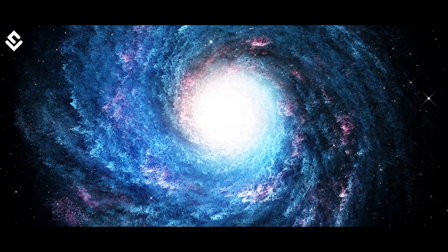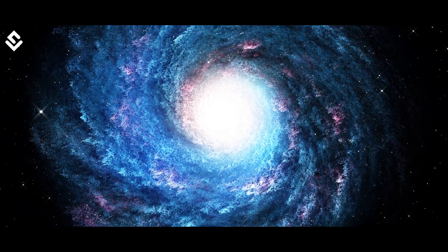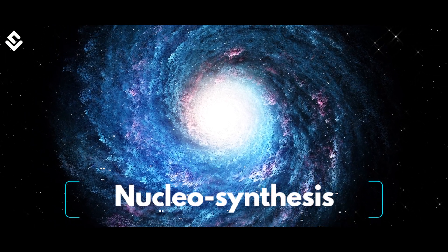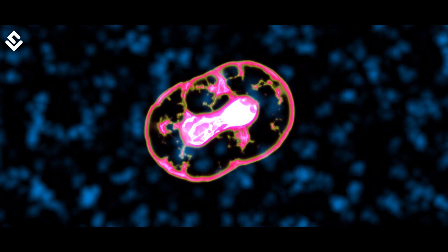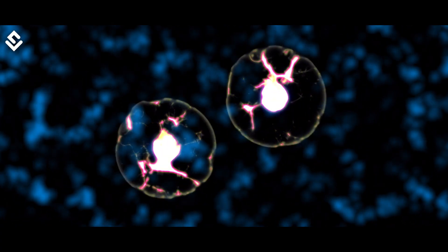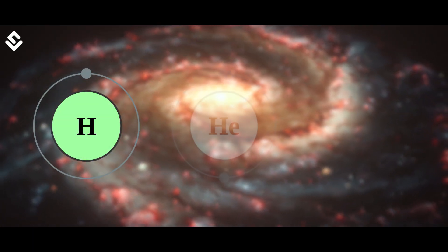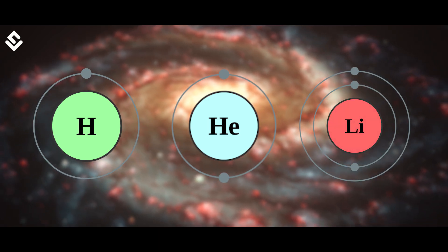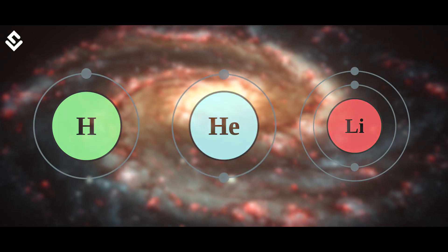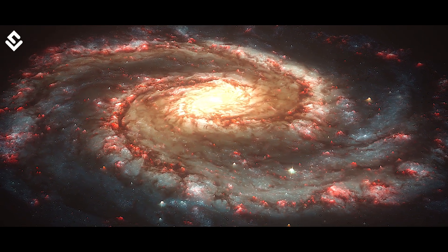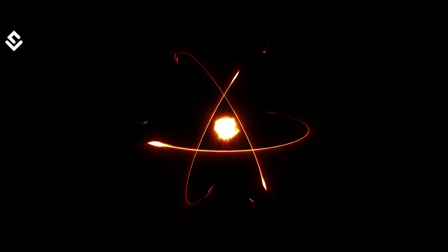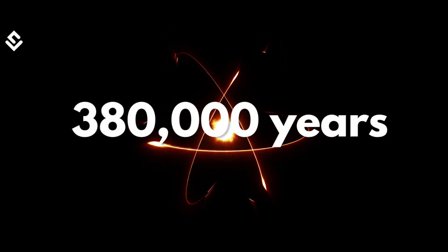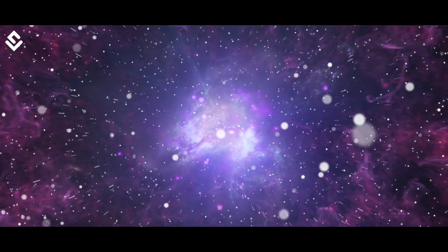The production of particles after the Big Bang is known as nucleosynthesis. After the first two minutes of the Big Bang, the first nucleus was formed. Nuclei of hydrogen, helium, and lithium were one of the first to be produced in the early oven of the universe. But the very first atoms were developed far later, around 380,000 years after the Big Bang.